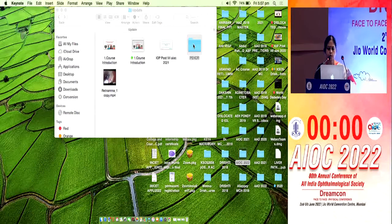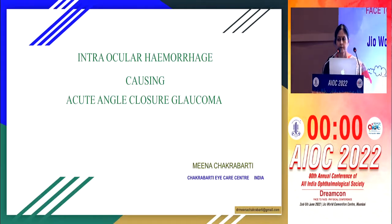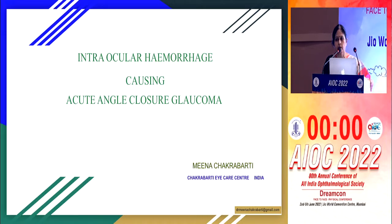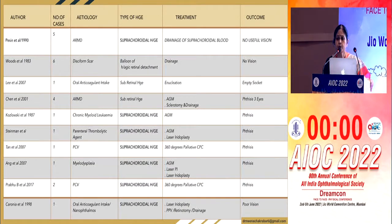The next topic is peripheral exudative hemorrhagic chorioretinopathy (PEHCR) in the elderly — an infrequently diagnosed but commonly encountered condition. Awareness is crucial because the majority of elderly patients are on anticoagulants, often both aspirin and clopidogrel. In this group, even subtle PEHCR changes can develop into massive suprachoroidal hemorrhage and acute angle closure. Two patients from clinical practice will be presented to illustrate the causes of acute angle closure in this setting.